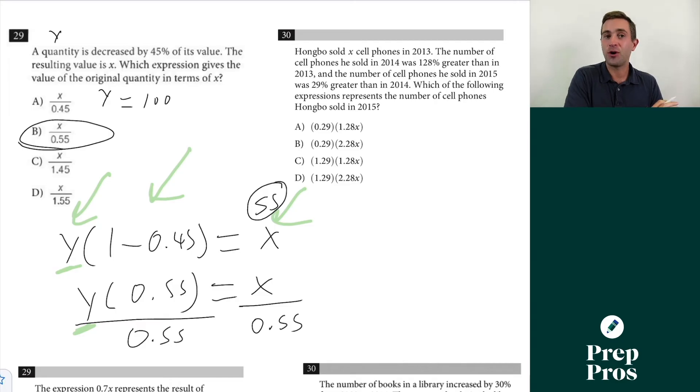We'll go through the next three that are all really similar and quite a bit easier. Hongbo sold x cell phones in 2013. The number of cell phones he sold in 2014 was 128% greater than in 2013. This one here is the exact same basically as example two, and this is going to be the same framework we saw with example three.